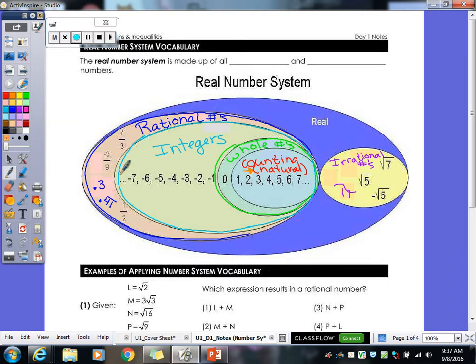And then that big huge whole circle here, those are our real numbers. Your rationals and your irrationals are part of your real number system. So that's what we're dealing with our entire year is the real number system. Now there are other numbers outside of that, but that's algebra two. You guys aren't going to get to that yet. We're only dealing with the real number system.